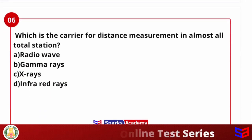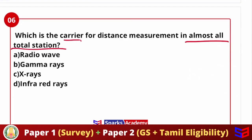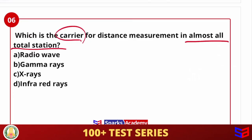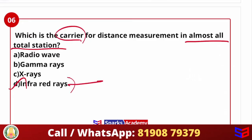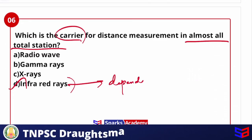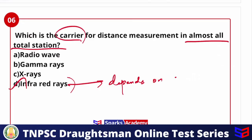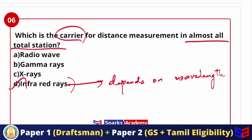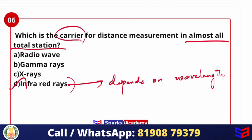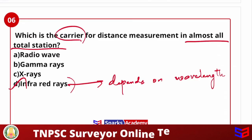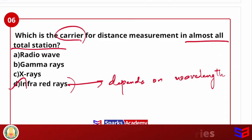Which is the carrier wave for distance measurement in almost all total stations? Options include radio wave, gamma ray, X-ray, and infrared ray. The answer is infrared ray, because accuracy depends on the wavelength. If we use light rays to measure 2 km, the error range is 1 cm. But if we use infrared ray, the error range is only 3 mm. That is why infrared ray is used for all measurements.